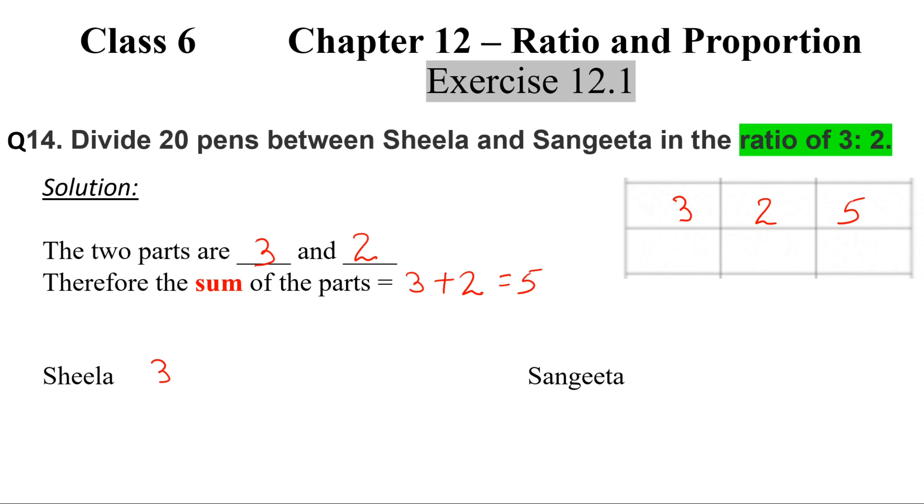Now Sheela gets 3/5 of 20. So that equals—5 ones are 5, 5 fours are 20, 3 fours are 12. And Sangeeta gets 2/5 of 20 pens. Simply multiply by 20 and this becomes 8.